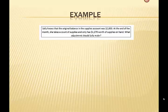Here's the example that we have. Sally knows that the original balance in the supplies account was $2,000, and at the end of the month or at the end of the period, she takes account of the supplies, the inventory, and she now only has $1,270 worth of supplies on hand. So, what adjustment should Sally make?